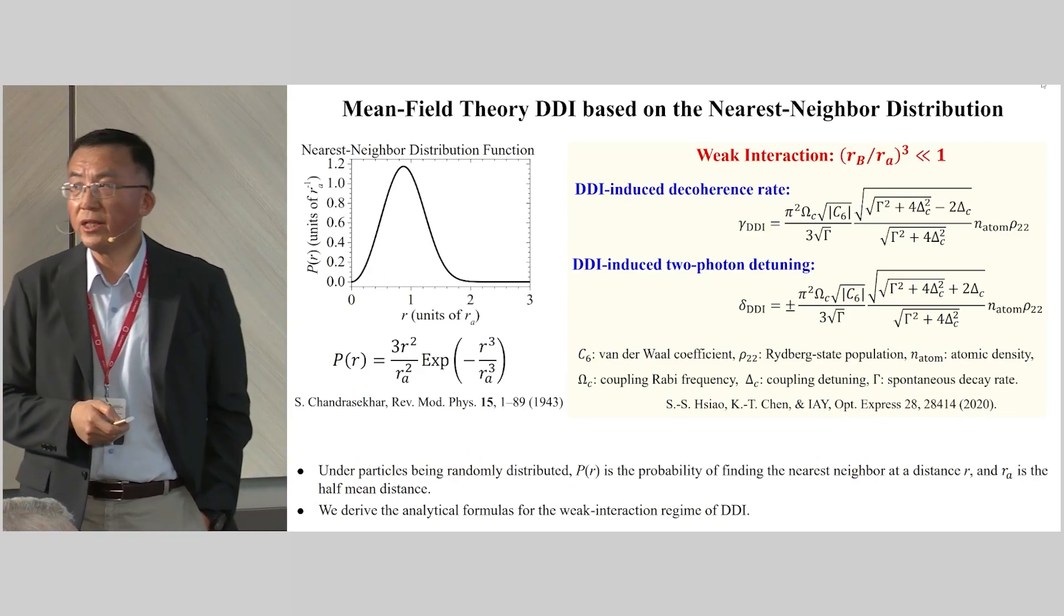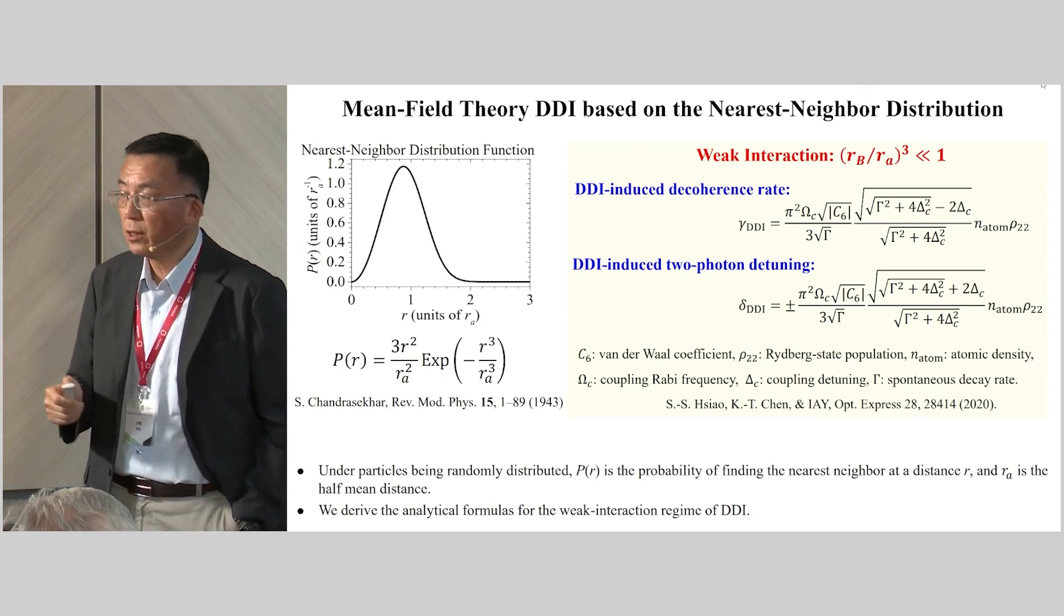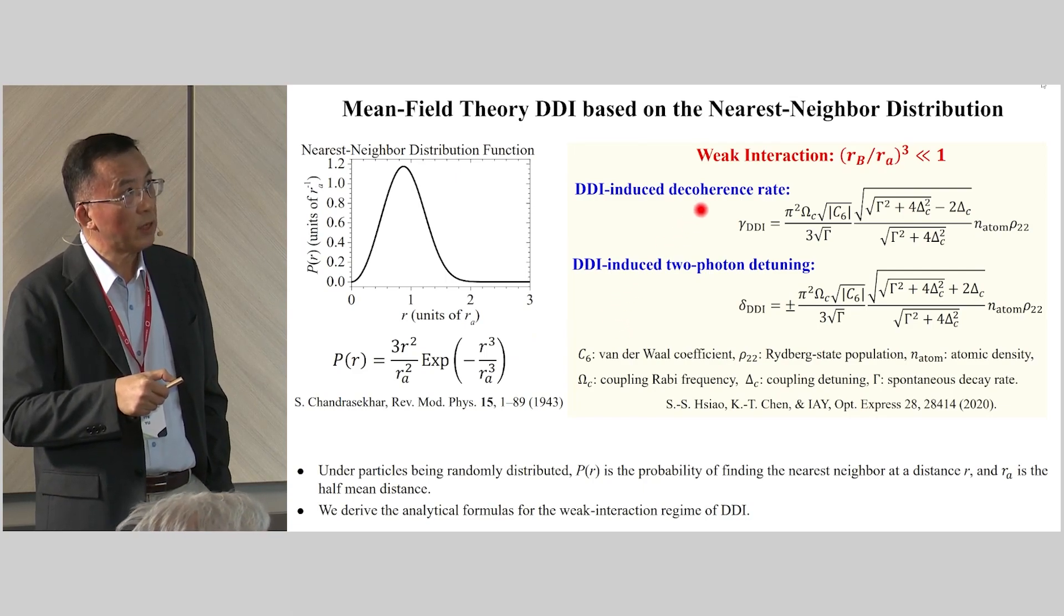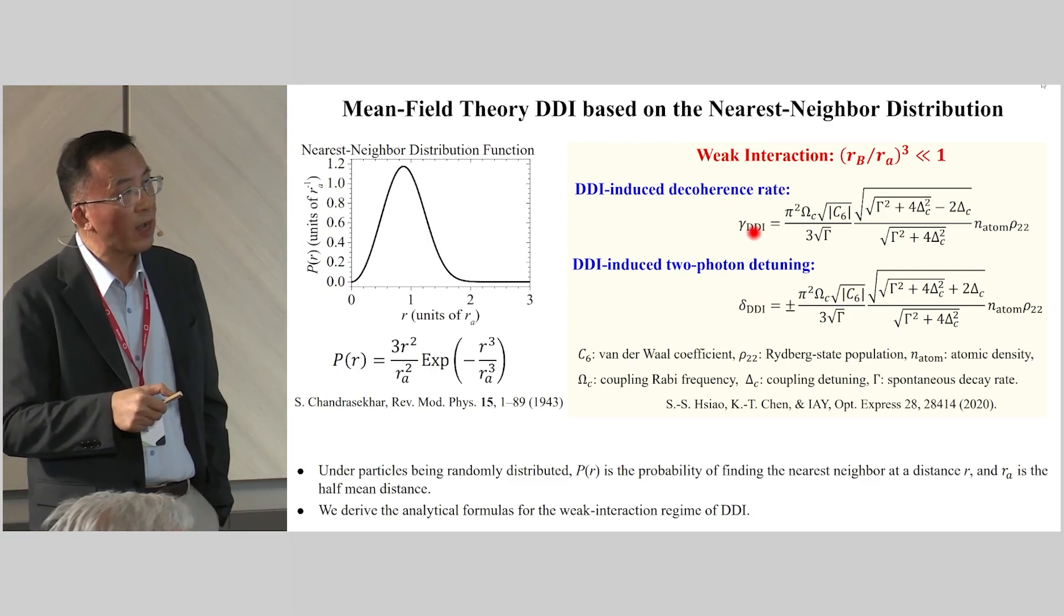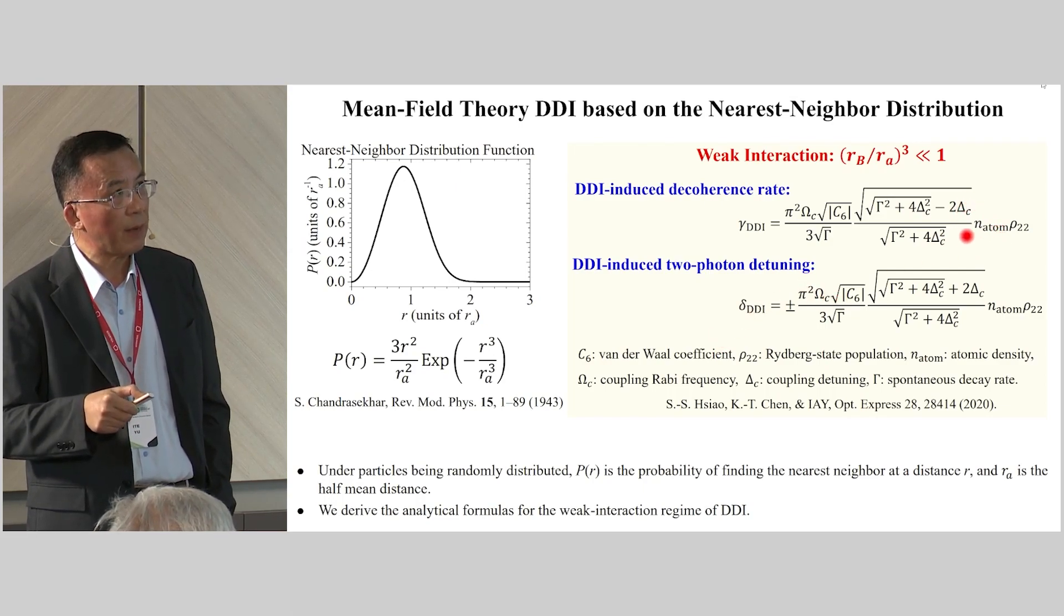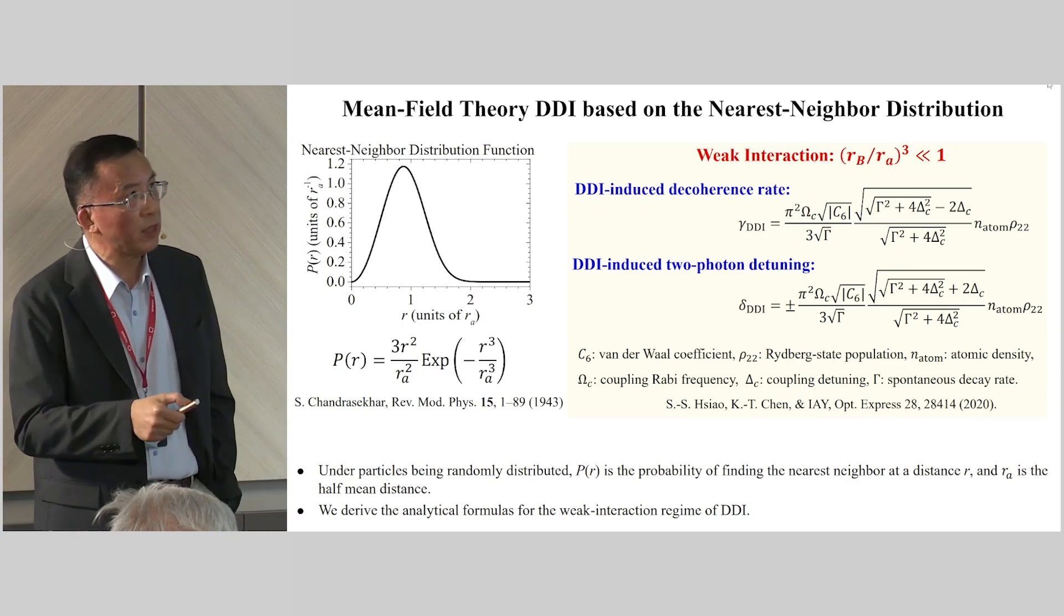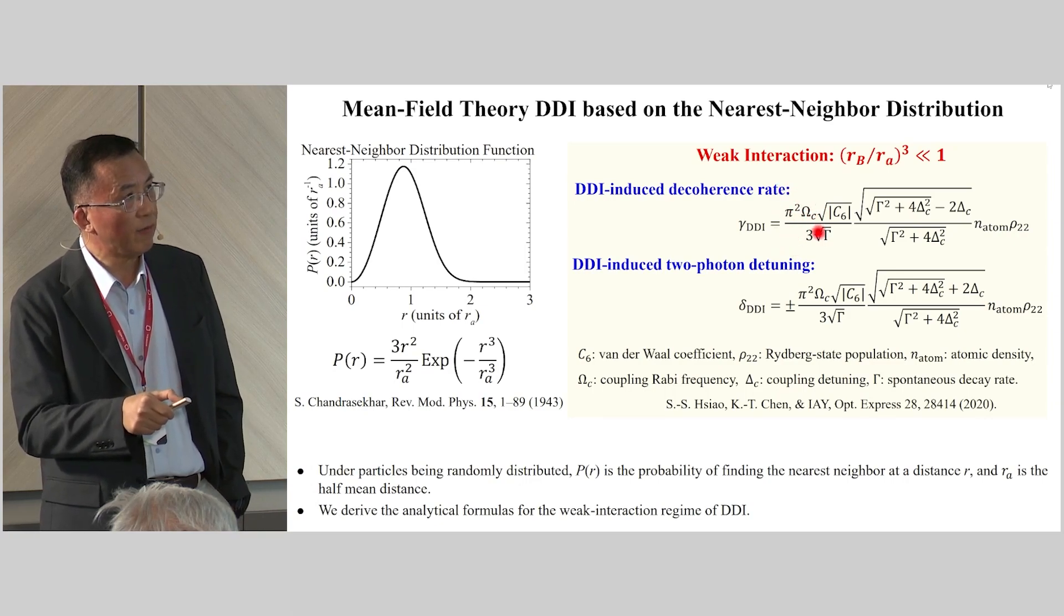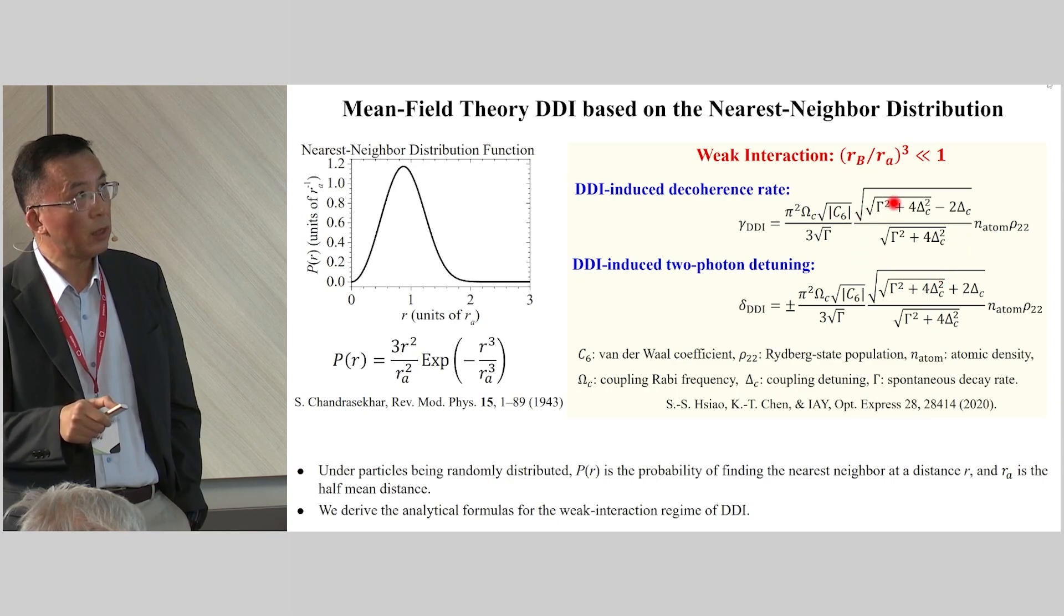Since we are dealing with the weak interaction region, where R_b is the blockade radius and R_a is half the mean distance between the Rydberg atoms, we can utilize this nearest neighbor distribution to derive the analytical formula of DDI-induced decoherence rate and also DDI-induced two-photon detuning. This DDI effect is proportional to square root of C_6. C_6 is the van der Waals coefficient, and also proportional to the product of atomic density and Rydberg state population, which is the Rydberg atom density, and also proportional to omega_C. So this proportionality is very common in several papers. Also, due to the different models, the coefficients will be very different. The interesting part is the decoherence rate and the two-photon detuning depend on the coupling detuning differently.